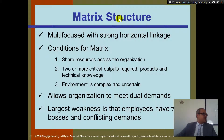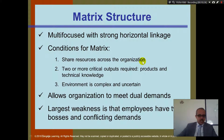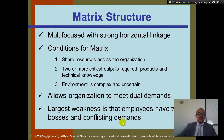The fourth type is the matrix structure, also called multifocused with strong horizontal linkage. Conditions for a matrix include sharing resources across the organization, two or more critical outputs required, combining products and technical knowledge, a complex and uncertain environment, and the need to meet dual demands. The largest weakness is that employees have two bosses and face conflicting demands.